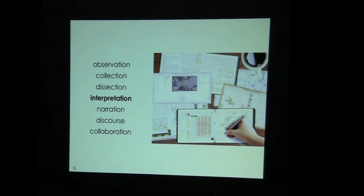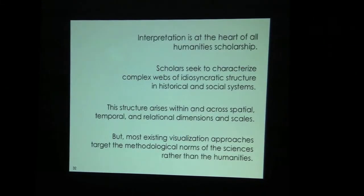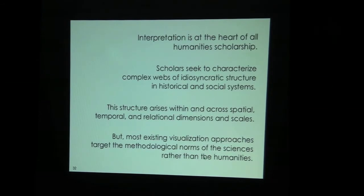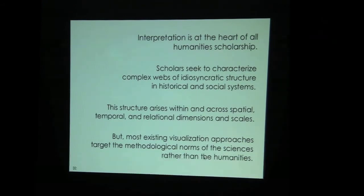Dissection is all well and good, but we would like a way for the analyst — the user — to inject their own interpretation into the visualization as well. Interpretation is at the heart of the humanities; it's a big part of what humanists do. When you do that, you want to characterize these complex webs of structure in the systems you're studying — structure that exists in space and time and in other data dimensions, across scales. The problem is that most visualization approaches have really targeted the sciences rather than humanities, largely numerical information rather than nominal, categorical, textual, or just rich complex data. So how can we start to try to get at that?